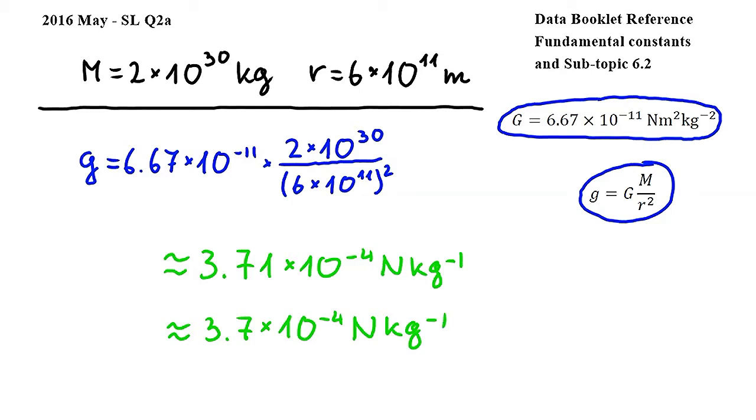Since this is a show that question, in order to earn the mark, you should round your calculated value to at least one more significant figure than the number of significant figures in the show that value that is given in the question. Since 3.7 has two significant figures, your calculated value should be rounded to at least three significant figures.